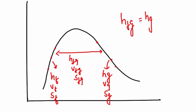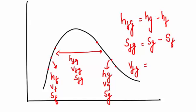So Hfg equals Hg minus Hf. Similarly, Sfg equals Sg minus Sf, and Vfg equals Vg minus Vf. Let's take a question.